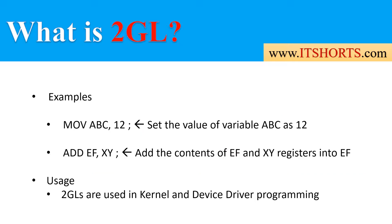Let's take a look at some examples. For example, 'MOV abc, 12' is a single line of instruction, which tells the program to set the value of the variable abc as 12. Another example is 'ADD ef, xy', where ef and xy are the names of registers. A register can be thought of as a holder in the CPU where it holds some values. This command says to add the contents of the ef register and the xy register and save the result into ef. There are many such commands that assembly language uses.